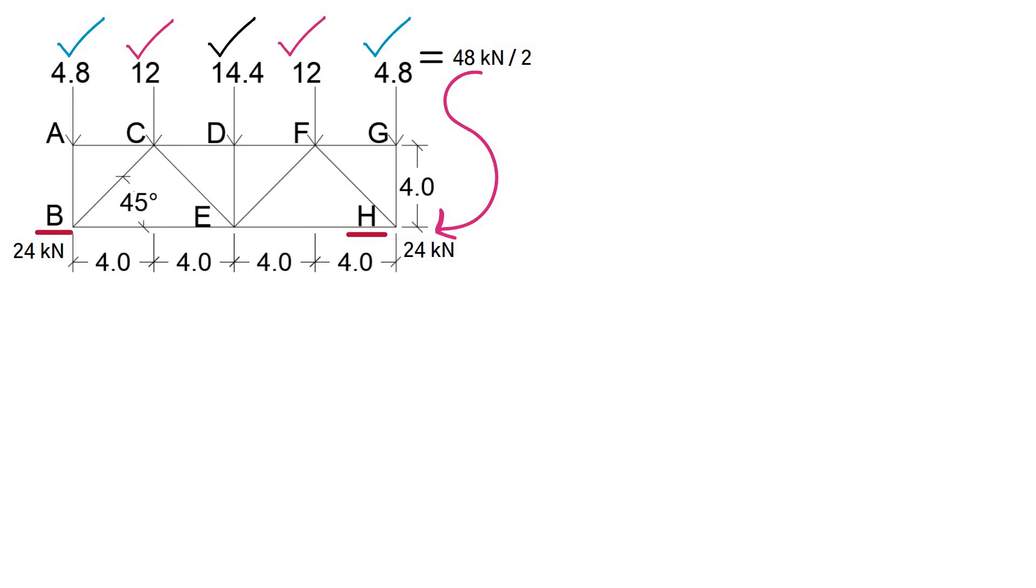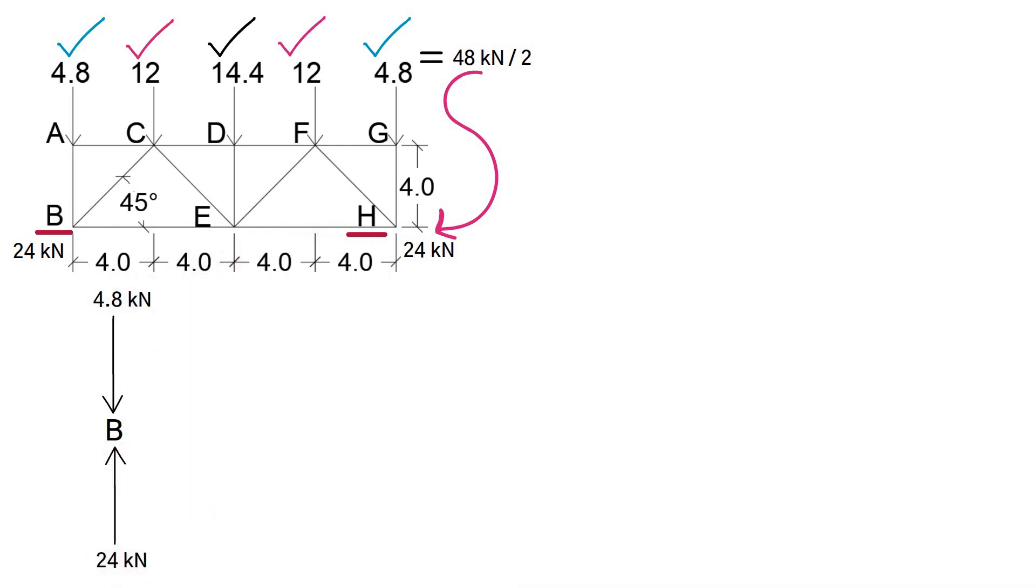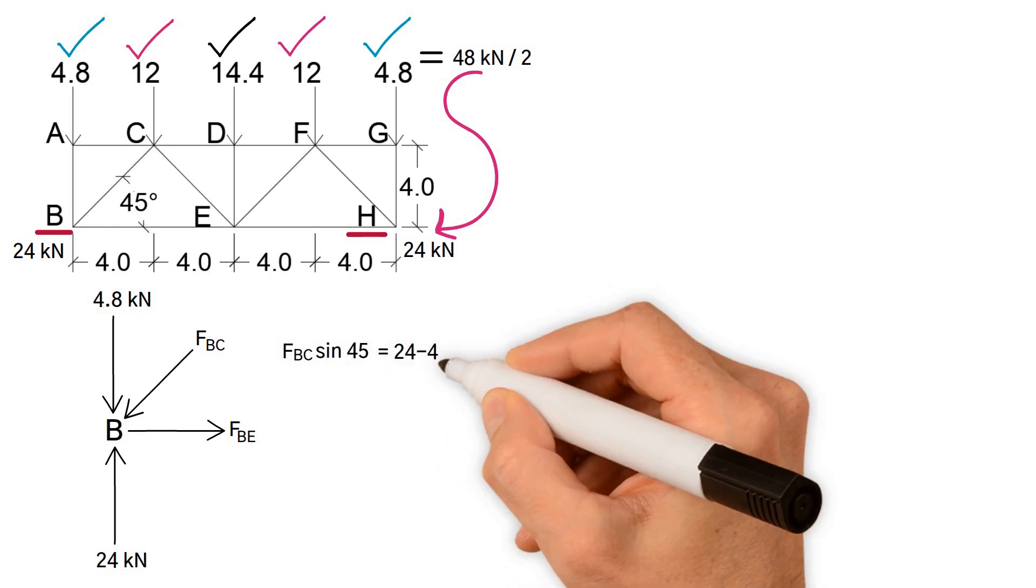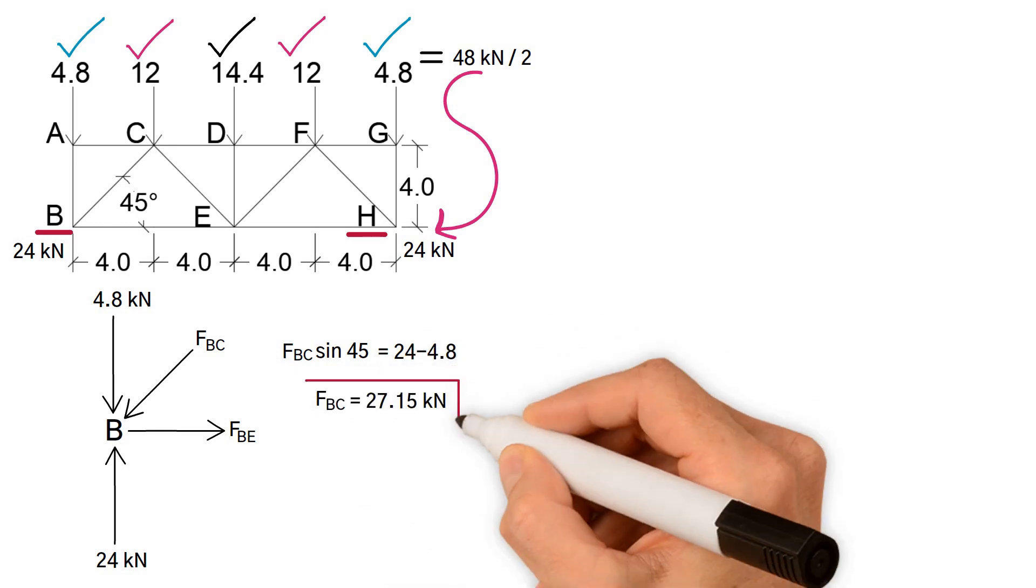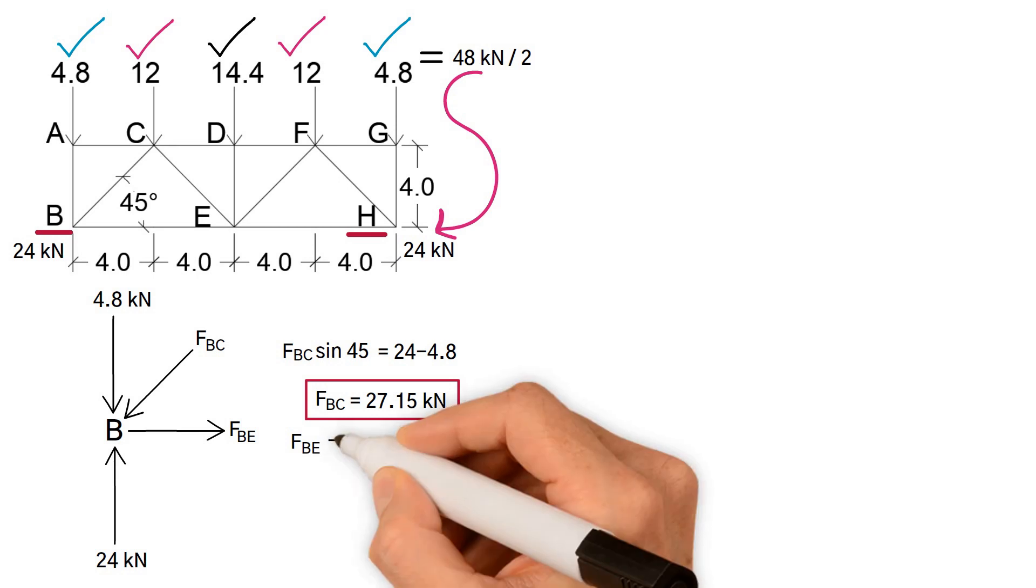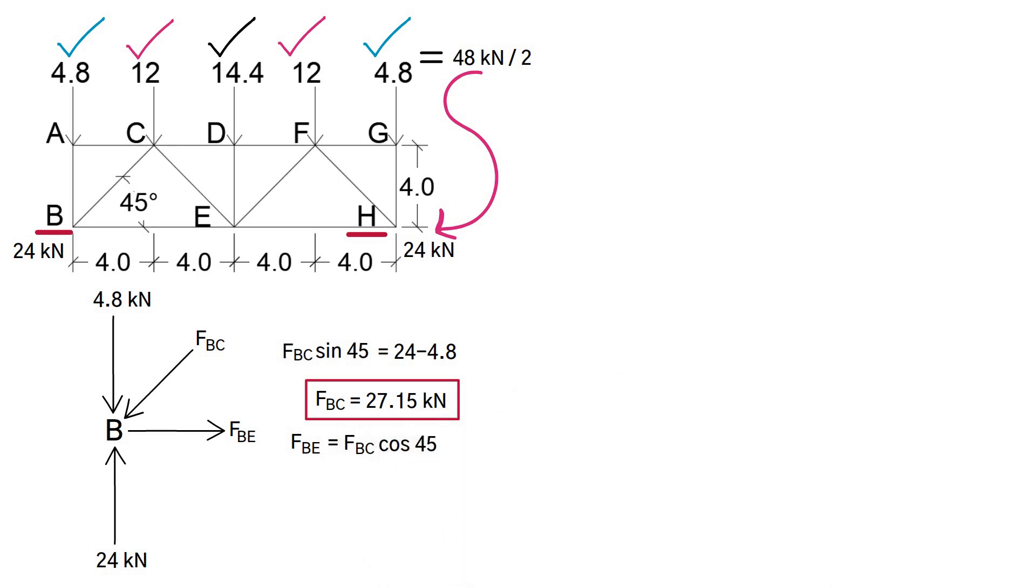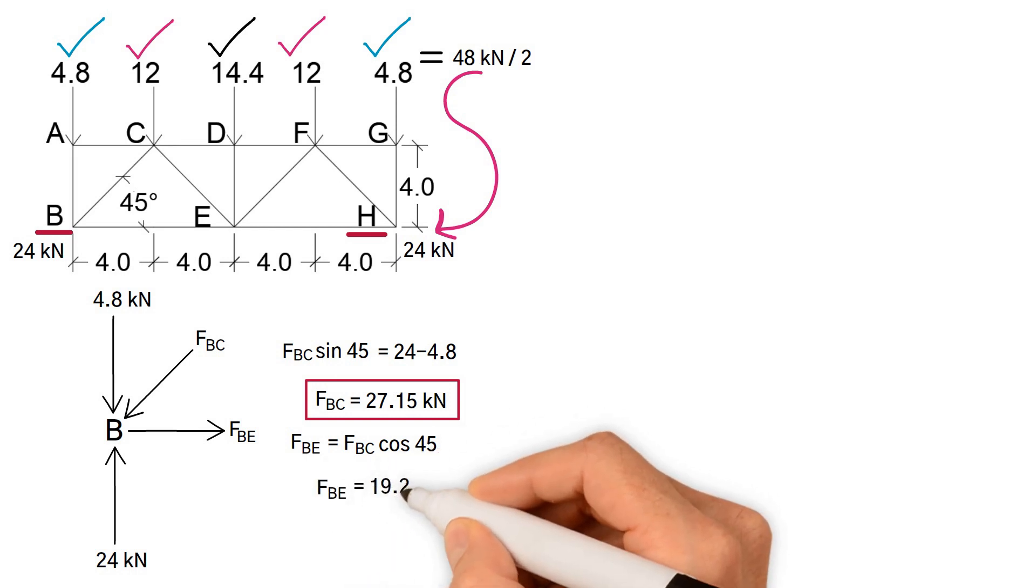We need to work out the diagonal forces, let's start with joint B. We have 4.8 kilonewtons in this direction and 24 kilonewtons in the other direction. For equilibrium in the vertical direction, the force of Bc sine 45 equals 24 minus 4.8. Hence Fbc equals 27.15 kilonewtons. In the horizontal direction, force Be should be equal to Fbc cosine 45. In result, Fbe equals 19.2 kilonewtons.